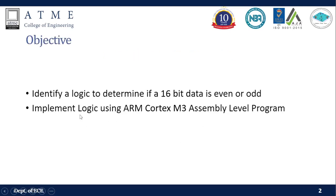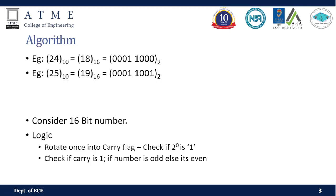We are going to go through the same two steps as in previous experiments: first, we look at the logic for finding out whether a number is even or odd, and then we implement that logic in the assembly level program. Let's look at the logic first. Take the decimal number 24, which in hexadecimal is 18.